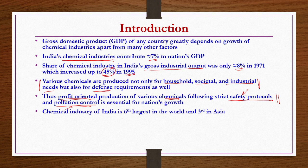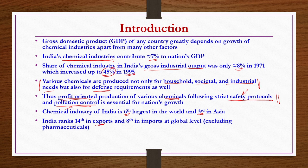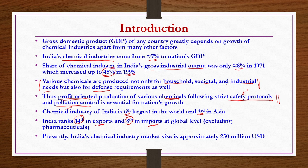India's chemical industry is the sixth largest in the world and third in Asia. Coming to exports and imports, it stands at 14th and 8th ranks respectively, globally. Presently, India's chemical industry market size is approximately 250 million USDs. That gives us an understanding of the importance of the Indian chemical industry and how much it contributes to the nation's GDP.